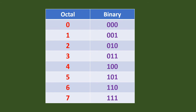Looking at the binary numbers, 000 is followed by 001 — it is simply plus 1. Then 001 plus 1 gives 010, and so on. The same pattern applies in octal: 0 plus 1 is 1, 1 plus 1 is 2, and so on.